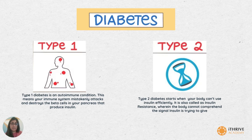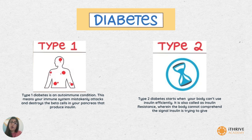Type 2 is a condition in which our body is not able to utilize insulin efficiently. This is also known as insulin resistance — either your body is not able to utilize that insulin or not able to understand the insulin signal.